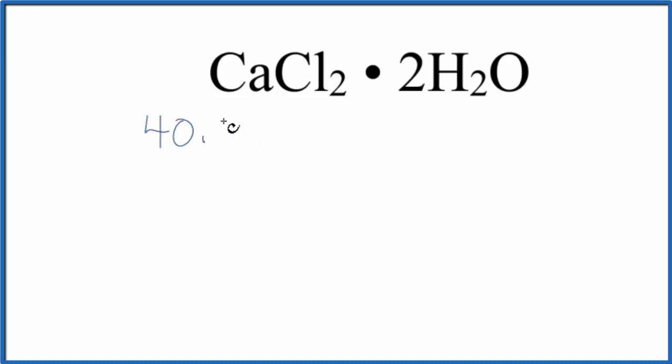the atomic mass of calcium is 40.08, plus chlorine, 35.45. But we have two of those chlorines, and that equals 110.98. The units are grams per mole.